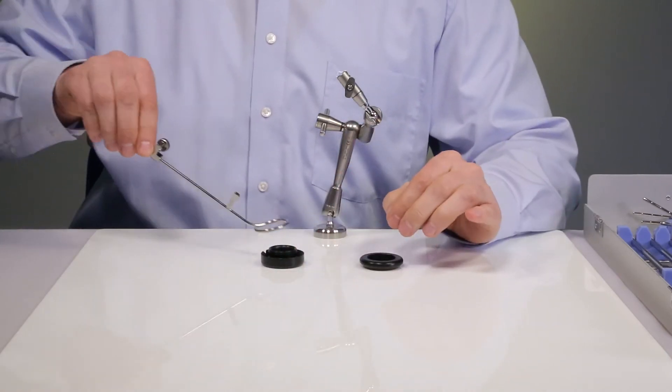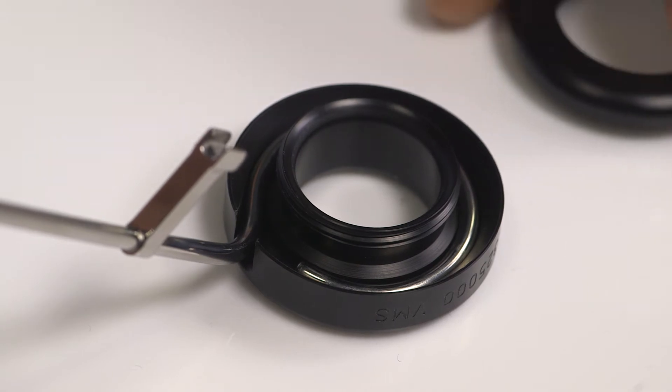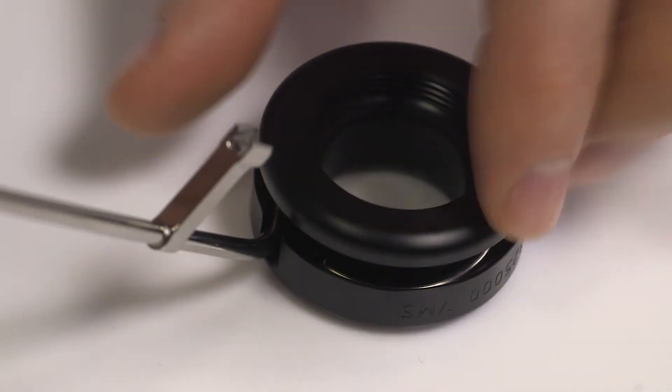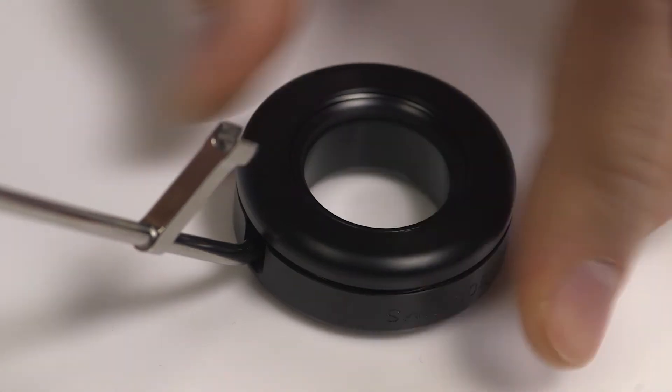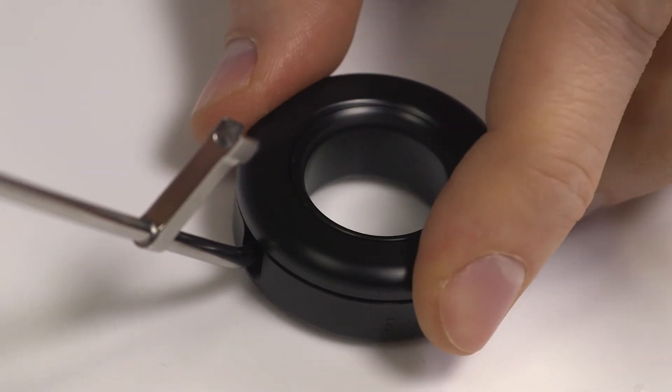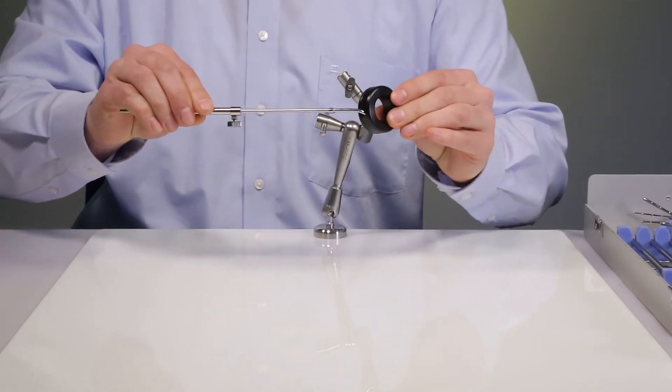The ring is put inside the distal part of the buildup cap and the proximal part is screwed onto the distal part. Now the assembly of the ring is complete.